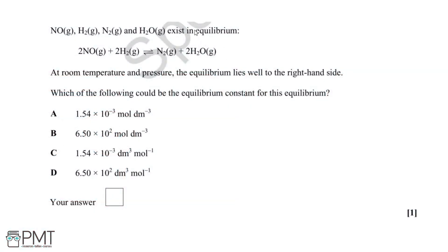The following compounds exist in equilibrium with the equation here shown below. At room temperature and pressure, the equilibrium lies well to the right-hand side. For this question, we have to deduce which of the following values could be the equilibrium constant by using all of this information here.